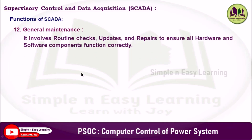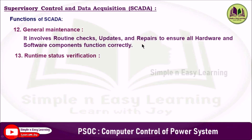The twelfth function is general maintenance, which involves routine checks, updates, and repairs to ensure all hardware and software components function correctly. This includes inspecting sensors, RTUs, communication links, and servers, as well as updating firmware and software, backing up data, and testing system performance. Regular maintenance helps prevent failures, extends equipment lifespan, ensures data accuracy, and maintains reliable system operation.